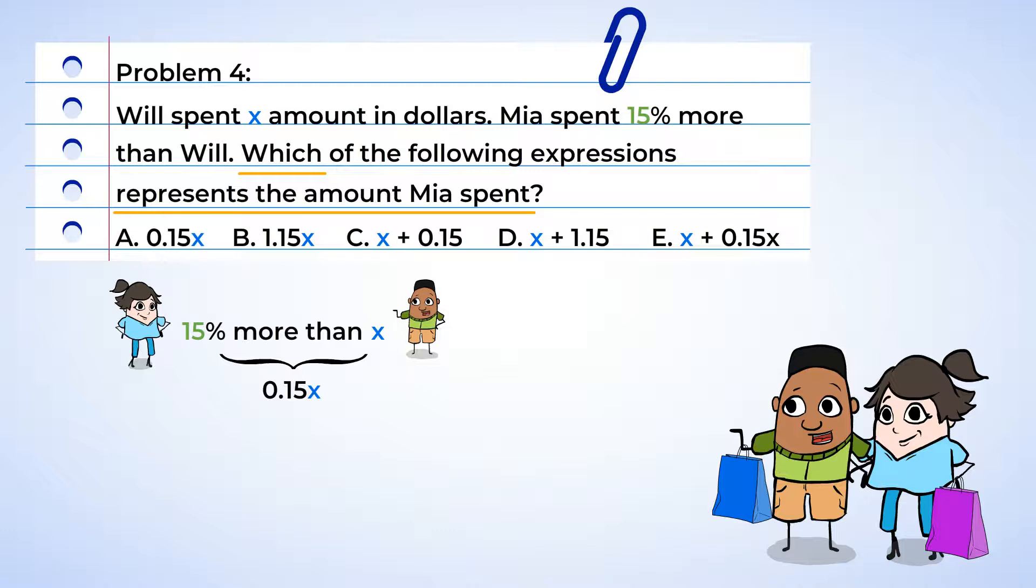Oh, we want to be careful though. Because 15 hundredths multiplied by X represents only 15% of what Will spent and not the amount that Mia actually spent. So we still need to add 0.15X to what Will spent, which we're calling X. Ooh, and we have a match. X plus 15 hundredths times X.